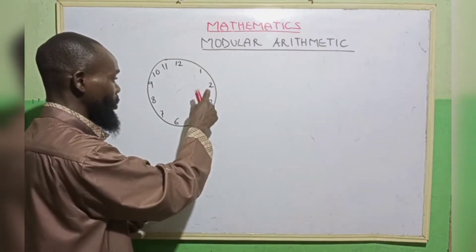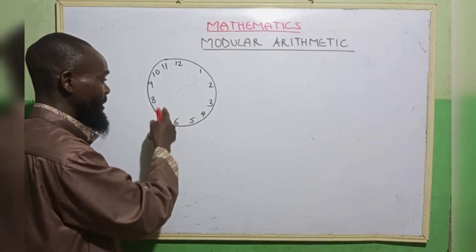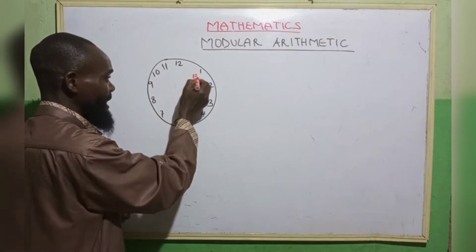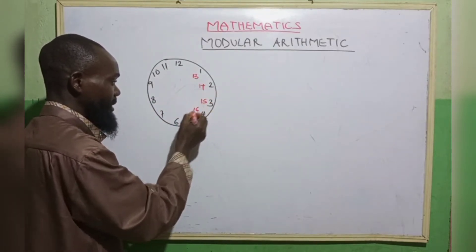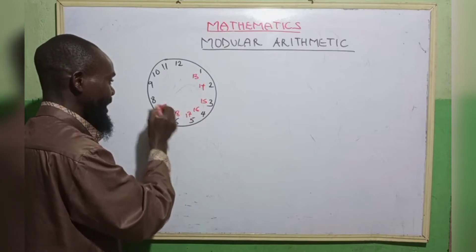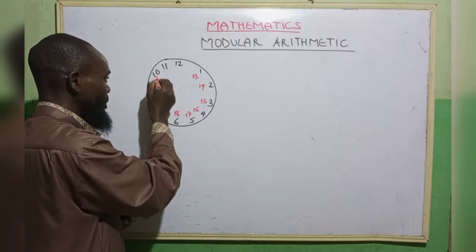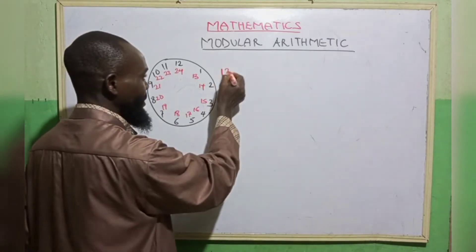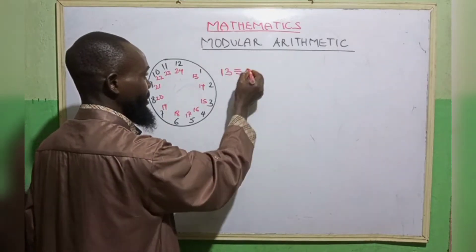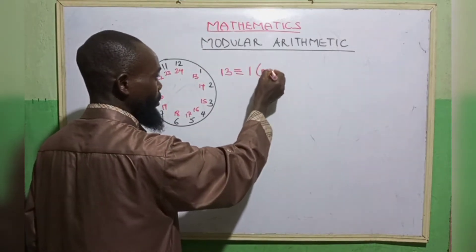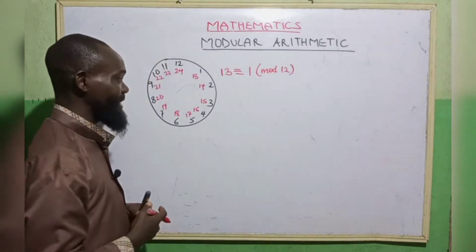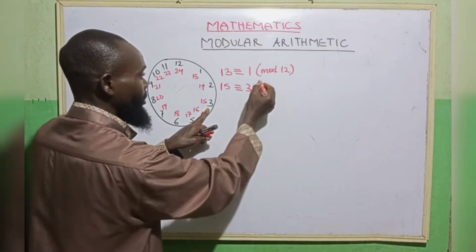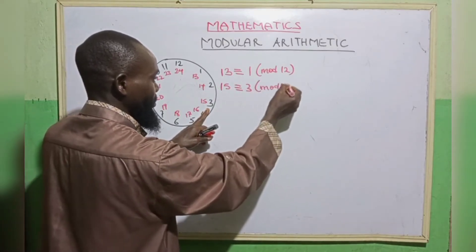So when we say 1, 2, 3, 4, 5, 6, 7, 8, 9, 10, 11, 12, then we have 13, 14, 15, 16, 17, 18, 19, 20, 21, 22, 23, 24. So from here, 13 o'clock is congruent to 1 in modulo 12. Likewise, we can say 15 o'clock is equivalent to 3 in modulo 12.